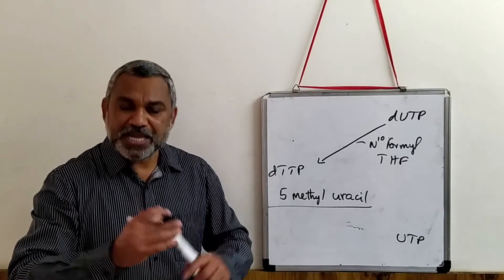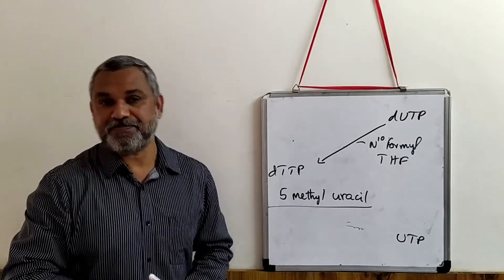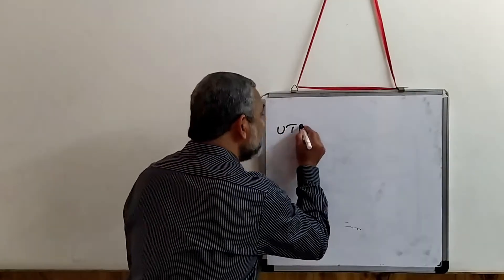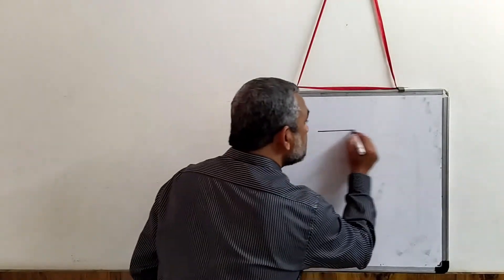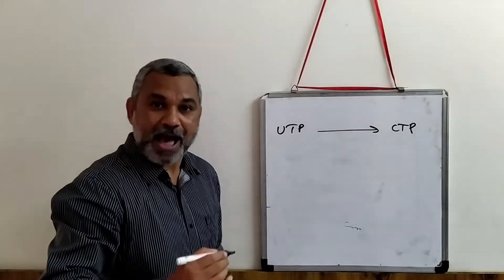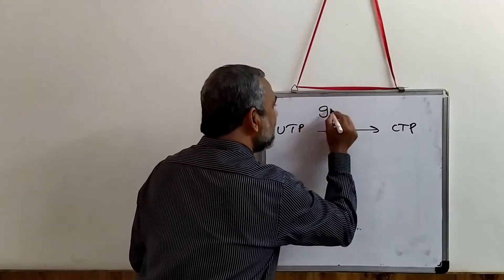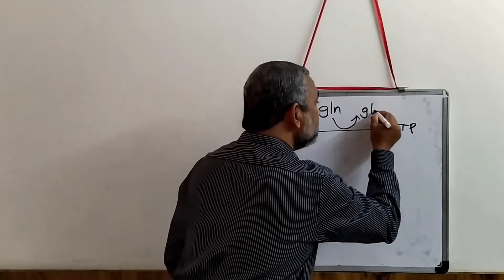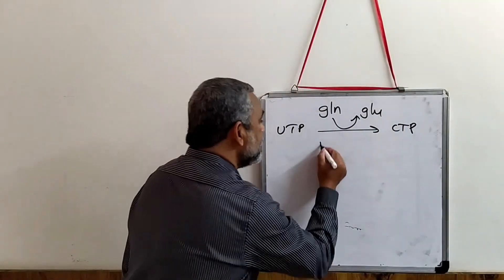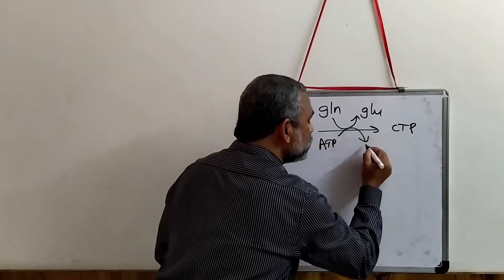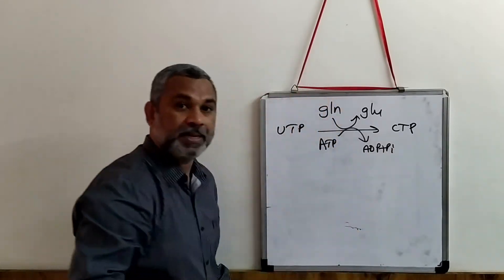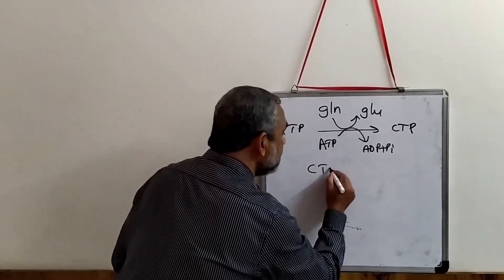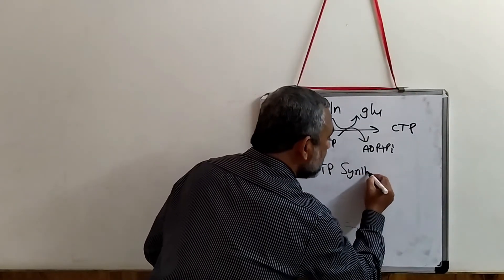We also need to synthesize CTP. CTP is made from UTP: an amino group is added, contributed by glutamine, which becomes glutamic acid in the process. ATP is required as an energy source, releasing ADP plus inorganic phosphate. This reaction is catalyzed by the enzyme CTP synthetase.